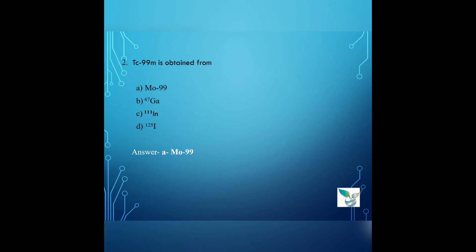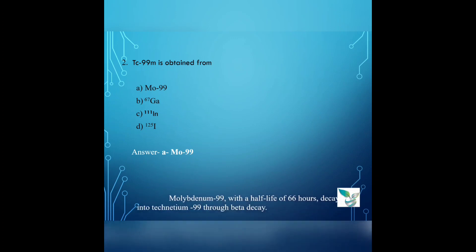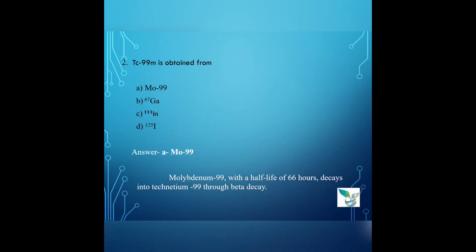Question number 2: Technetium 99M is obtained from — Option A: molybdenum, Option B: gallium, Option C: indium, Option D: iodine. The answer is Option A, molybdenum. Molybdenum-99, with a half-life of 66 hours, decays into technetium-99 through beta decay.